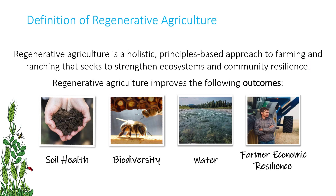In Chapter 2, we discussed General Mills' outcome-based definition of regenerative ag. We would consider a farm regenerative if it's improving soil health, biodiversity, water, and farmer economic resilience. But how do you measure these things at the scale of millions of acres? We definitely don't have this all figured out yet, but I'll talk a bit more about what we're doing today and where we might be going in the future.